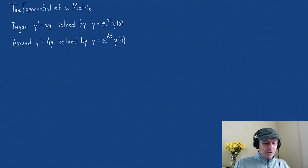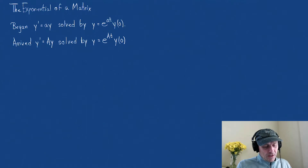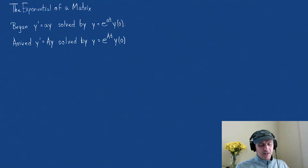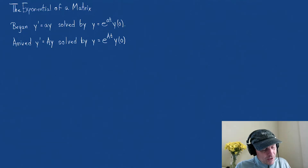We're going to first just start off: what does it mean to be e to the A t? I think it'll make more sense if we look at e to the little a t first. That's something we've seen before, so let's use that as our stepping stone.